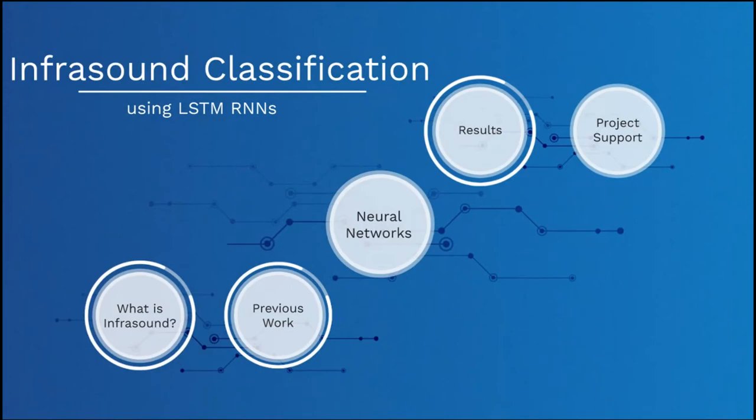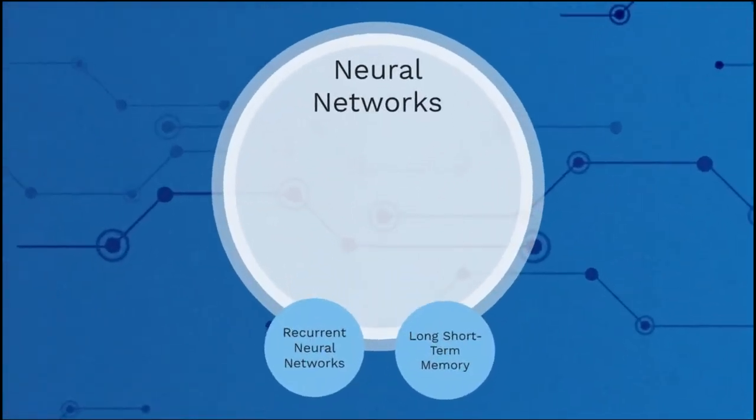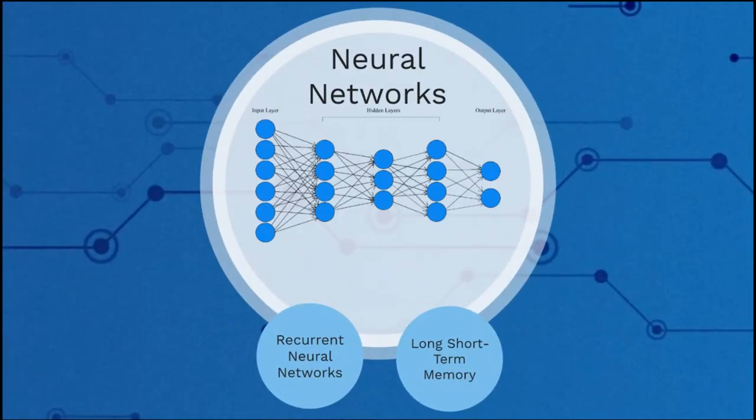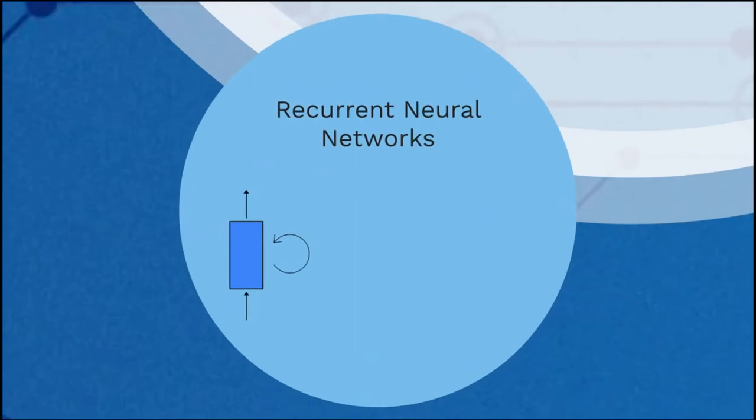We classified these events using a long short-term memory recurrent neural network. Neural networks are a family of machine learning algorithms defined by layers of nodes with weighted connections, like neurons in the brain. Recurrent neural networks are a specific type of neural network well suited to working with time series data, like infrasound, because layers are also connected through time.